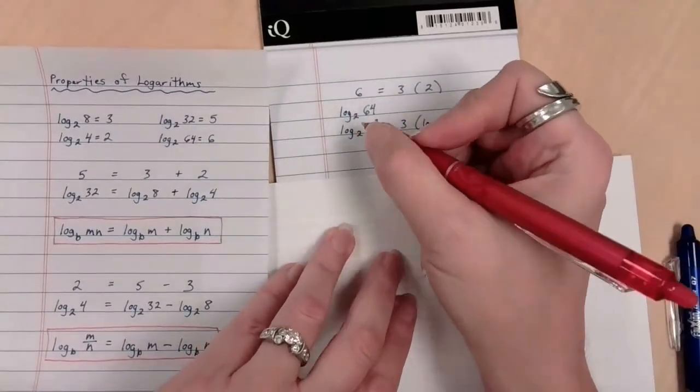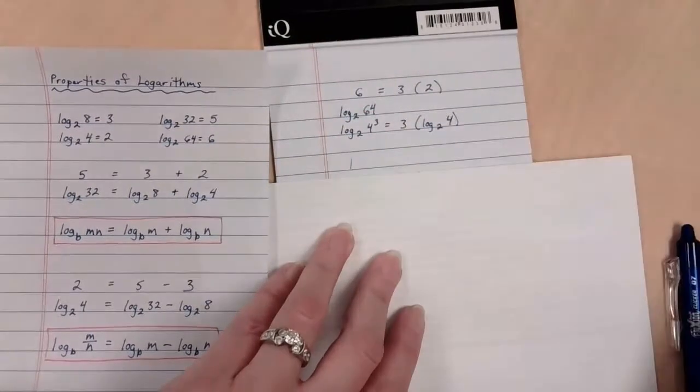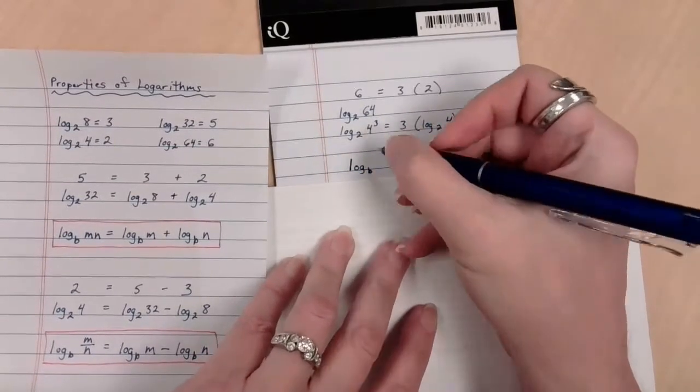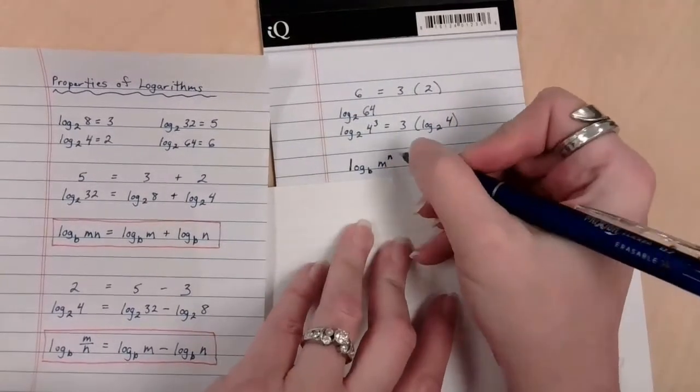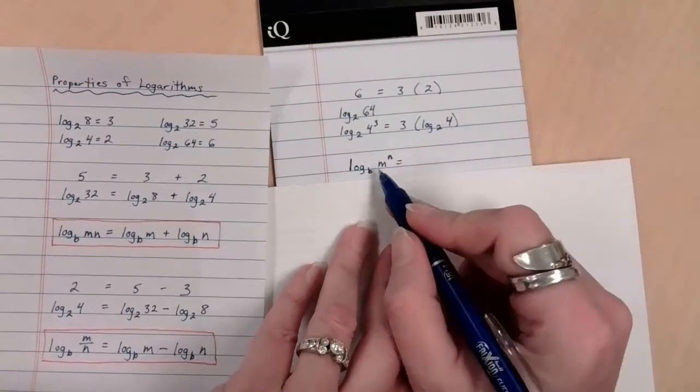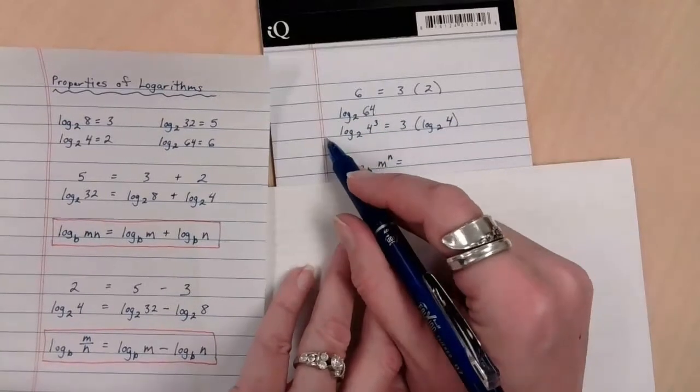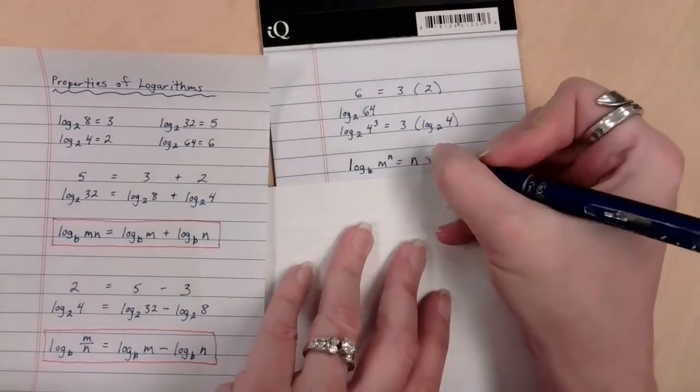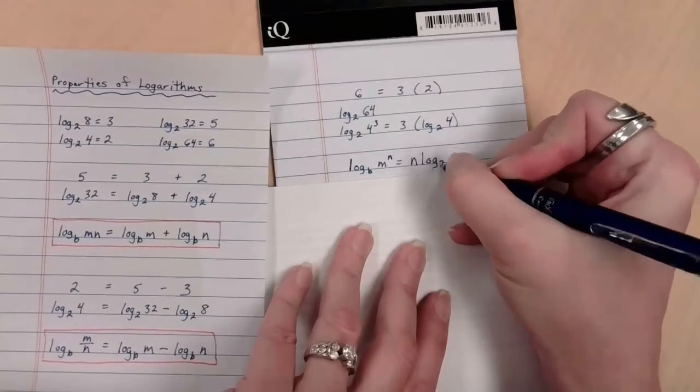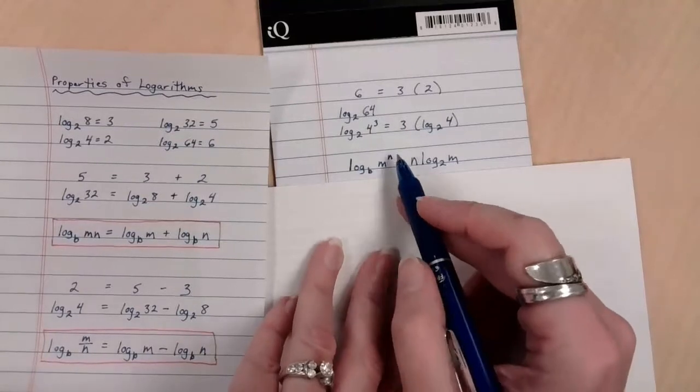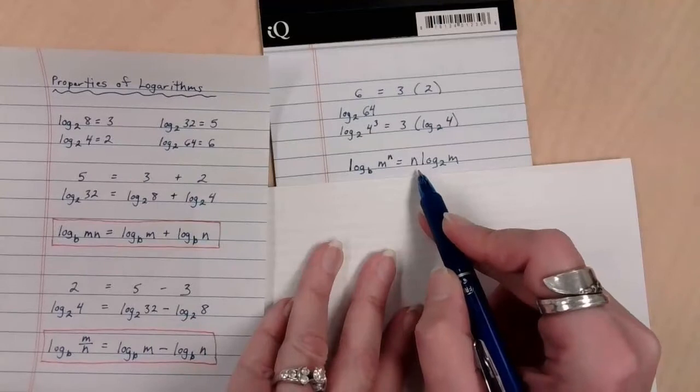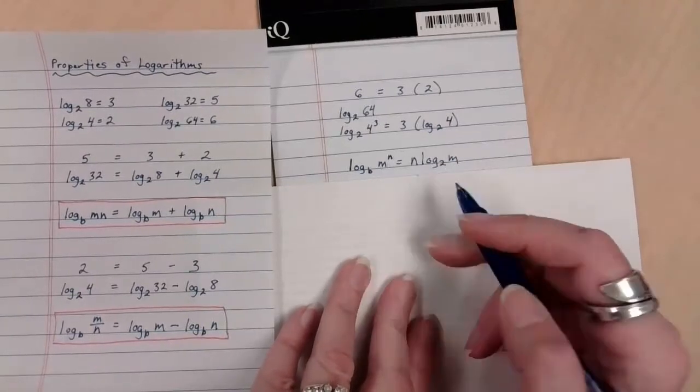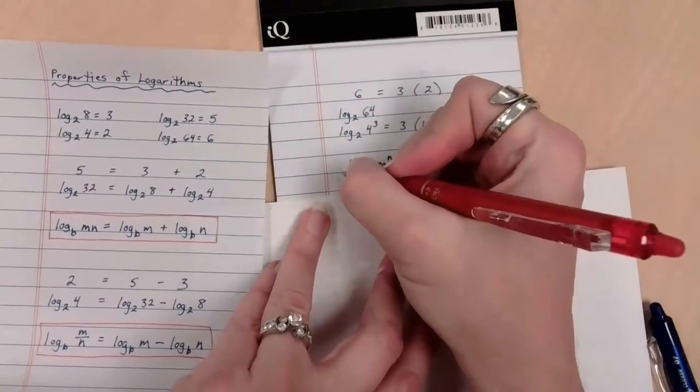What does this mean? This is our next property, which is saying that log base B of M to the N power is the same thing as taking that exponent and swinging it out front as a multiplier. So this N that was an exponent now goes out front as a coefficient, and it becomes N times log base B of M. My brain calls this the swing property. If I see an exponent here, I can swing it out front and it becomes a multiplier. Vice versa, because these things are two-way streets. If I see a coefficient out front, I can swing it around and call it an exponent. That is property number 3. And those are our three properties.